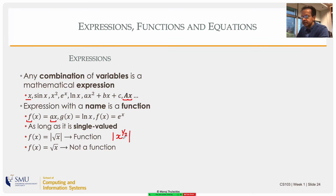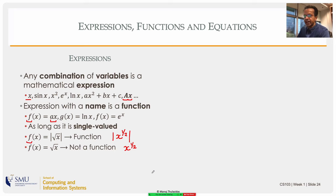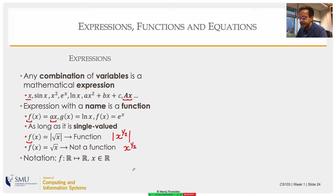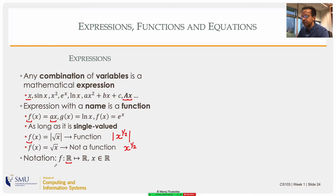If I say f(x) = x^(1/2) without the absolute value, is this a function? No — it's not single-valued. That's the key point. We will use the notation ℝ to stand for the set of all possible real numbers. If I define a function, it might take a value in ℝ and map it to another value in ℝ, written as f: ℝ → ℝ. This is similar to a computer language assignment — when you say x = 5, you have a memory location labeled x and you're putting the value 5 in it.